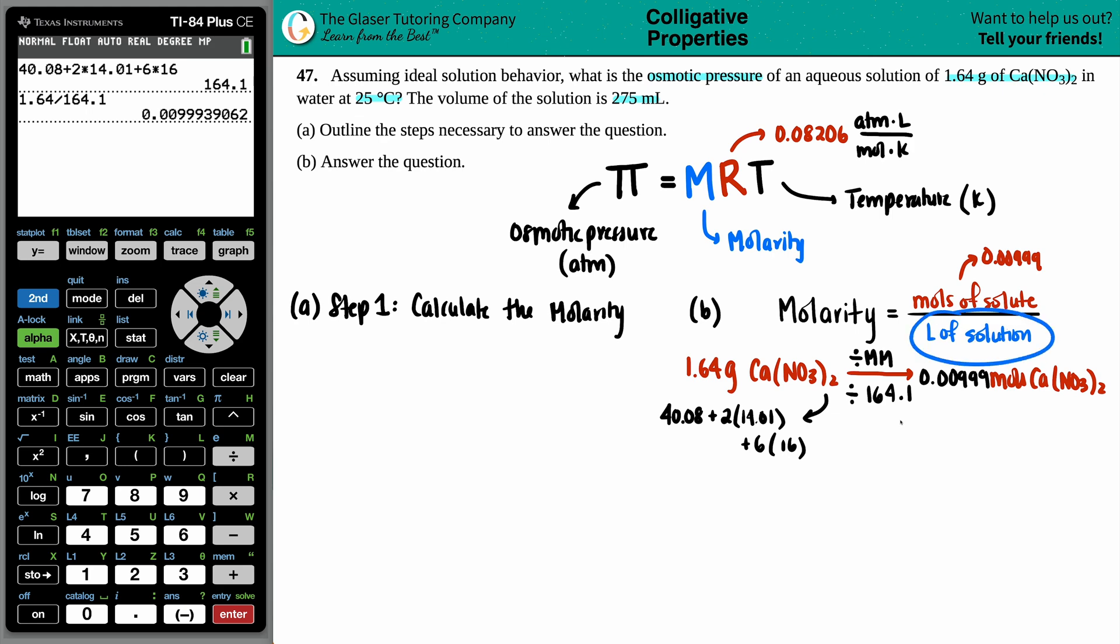Now I need the liters of the solution. Well, they gave us that the volume of the solution was 275 mils. So let's just quickly convert the 275 mils into liters. Milliliters to liters, that is dividing by 1,000. This is going all the way back to the beginning of your SI units. You could take your decimal, move it to the left three times as well. So this would be 0.275 liters. So now we have this number.